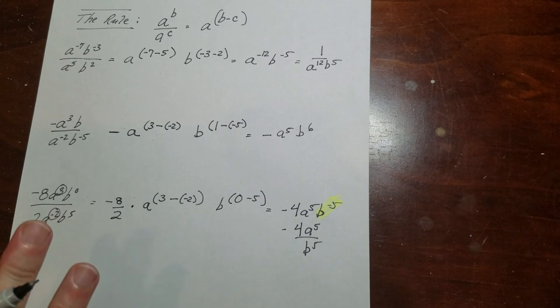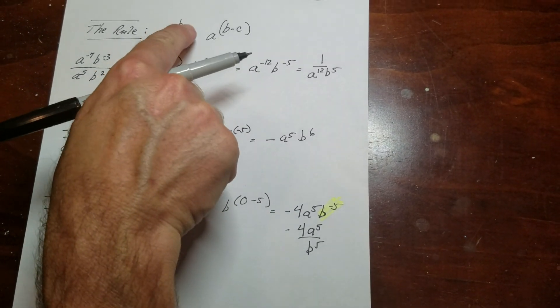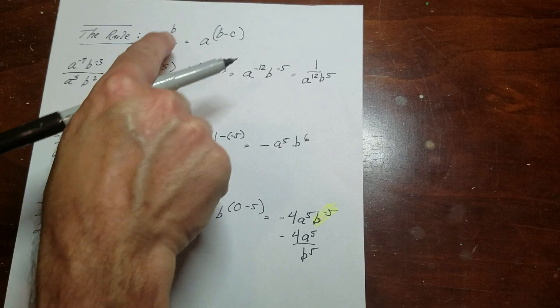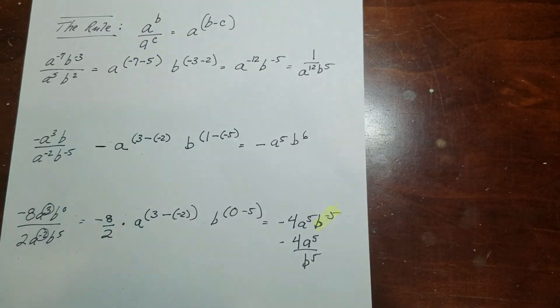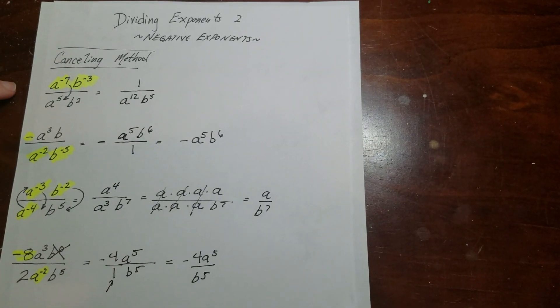And that's how you do it. So your choices are to do it this way, using the rule, which is as long as the bases are the same, you subtract the exponents, or you can simply just move things around and cancel.